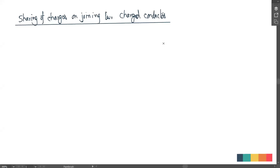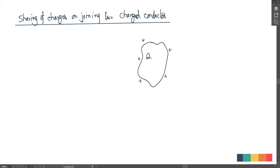You have two random metallic designs — not necessarily spherical, they can be any shape. Let's say the first design has some charge; I'm just randomly drawing some positive charge, so let's say the charge is q1. And obviously the metal has some potential, so the potential of the first metal design is, let's say, v1.